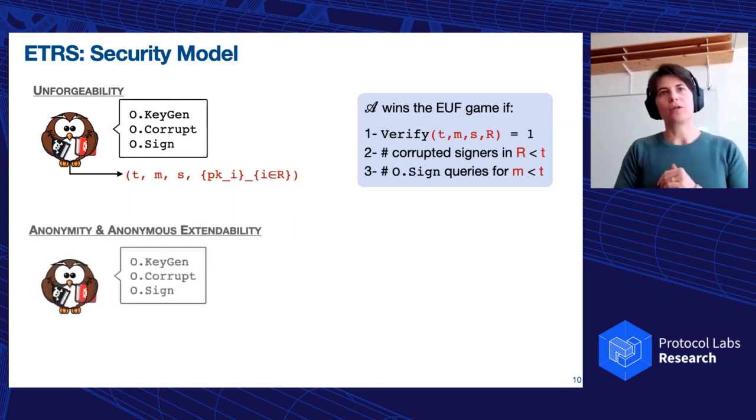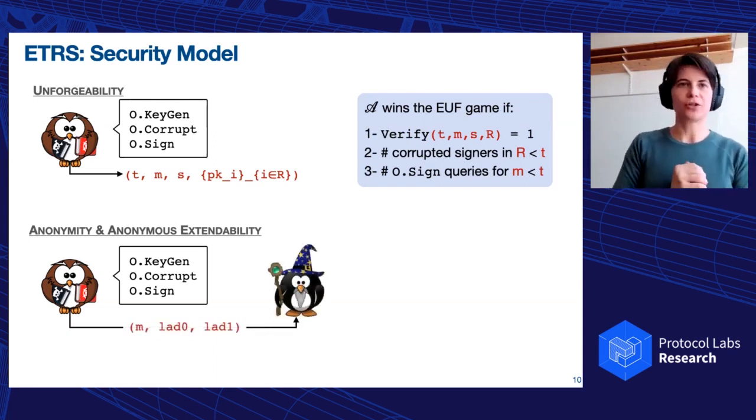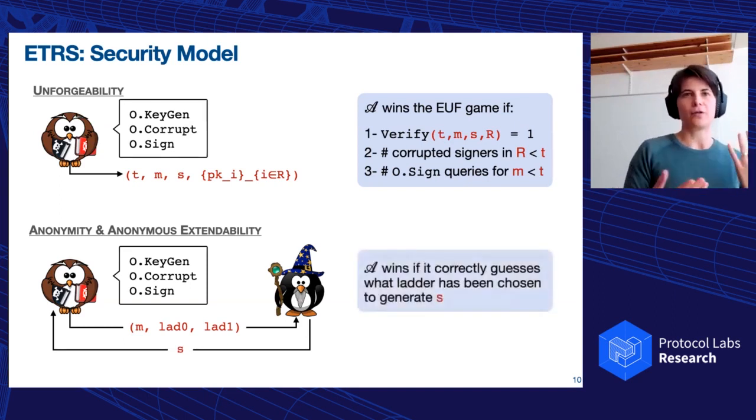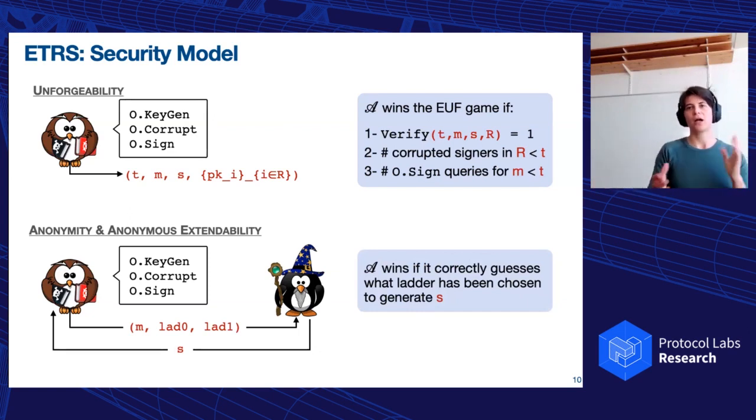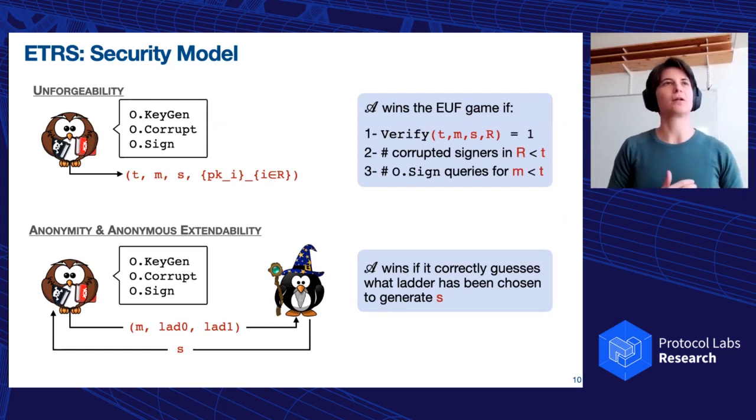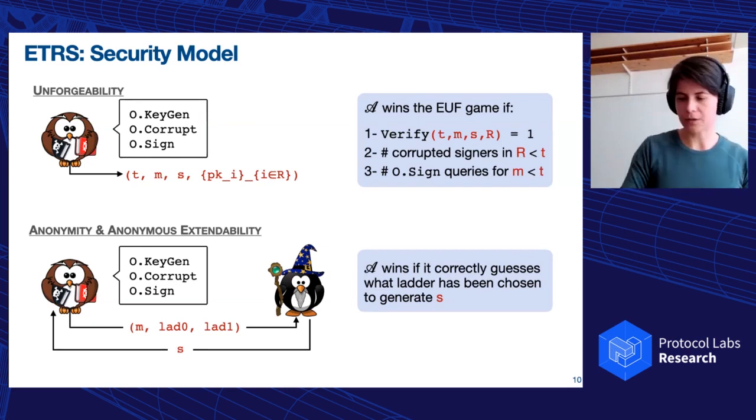Essentially, for the same reason, but a bit more technicality here, we cannot let the adversary interact with the signing Oracle for this specific message chosen for the unforgeability more than T times, because otherwise it could recycle those in. And for anonymity, I already anticipated a little bit with the previous slide and the two ladders, but essentially we give the adversary access to the same Oracle as before. But this time, the adversary will interact with our amazing challenger to whom he will give a message and two ladders, and the challenger will reply with a signature. And for anonymity, we have the adversary should be able to correctly guess which of the two ladders has been executed by the challenger. And we have two notions of anonymity and depends if you allow for ladders to grow even with different lengths, or if you just allow one extension or just a simple, you cannot distinguish who is the signer in a given set.